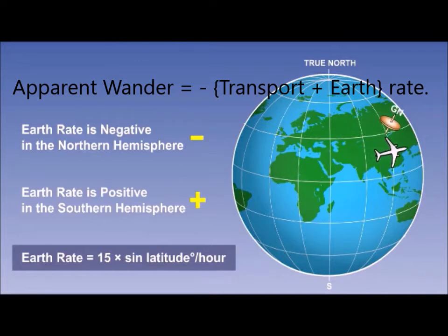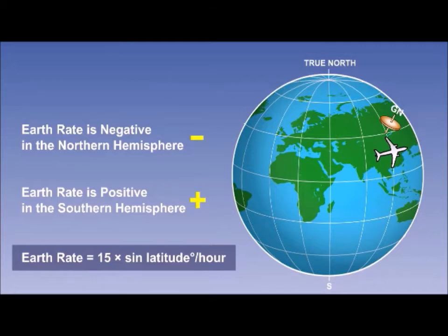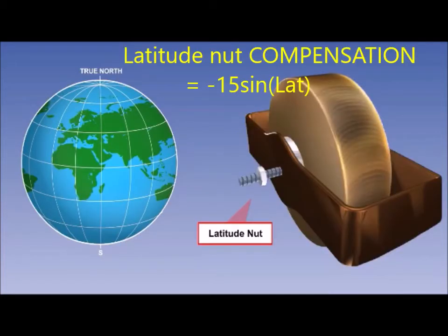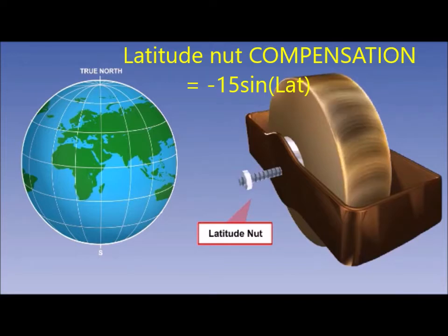When we come to do calculations, we calculate the error for transport wander separately and add or subtract it to the equation for total wander. At the equator, the latitude nut is central on the thread as no induced wander is required. As latitude increases north of the equator, the latitude nut is wound out to cause real wander equal and opposite to the apparent wander caused by the earth's rotation.